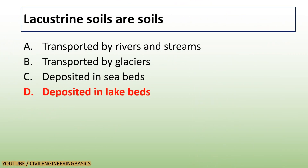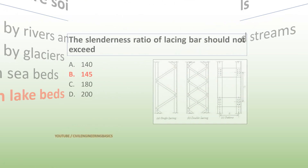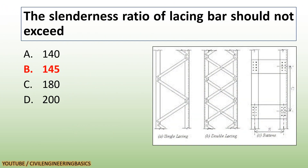Lacustrine soils are soils deposited in lake beds. The soil deposited in a lake bed is called lacustrine soils. The soil synthesis bar should not exceed 45.